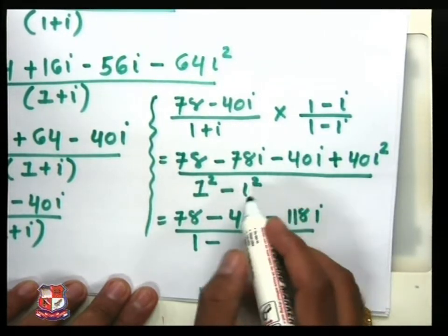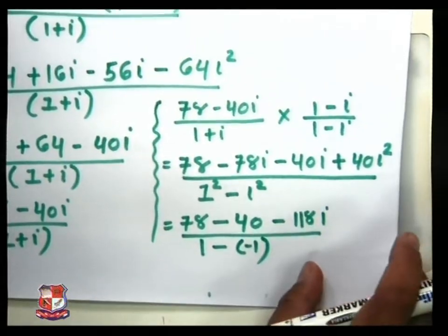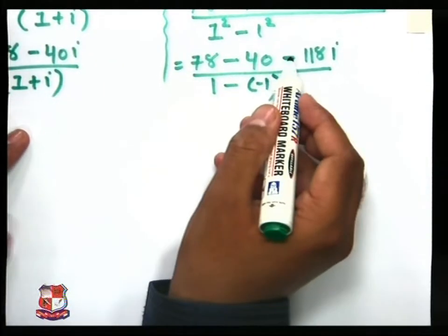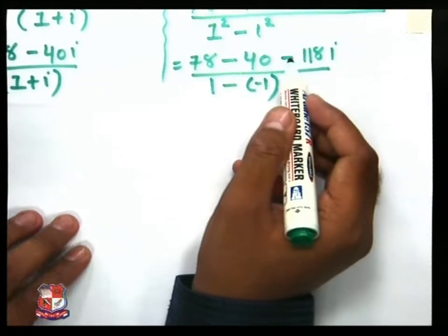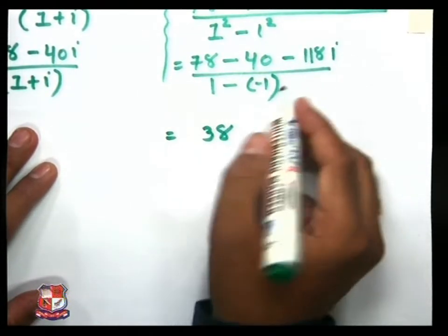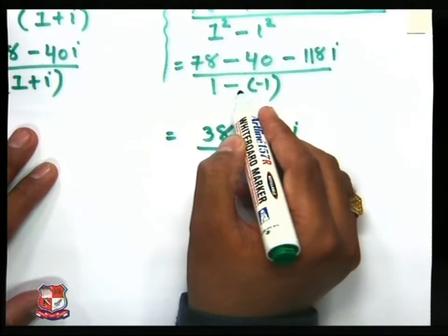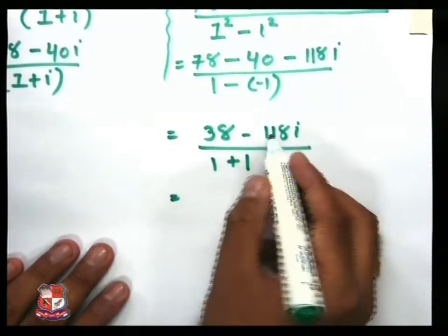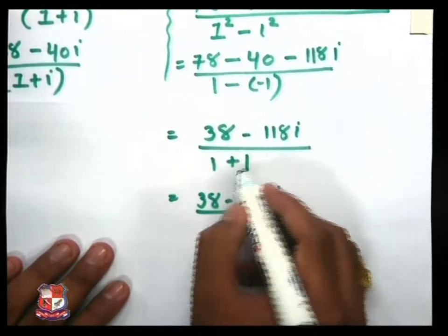Our result is 78 plus 40, that is nothing but addition. Say minus 78i and minus 40: 78 plus 40 that becomes 118, but the sign is negative because both terms have a minus sign. So minus 118i, divided by: here 1 squared is 1, minus sign as it is, i squared value is nothing but minus 1. So again i squared is replaced by minus 1, giving 1 minus negative 1, which is 1 plus 1 that becomes 2.